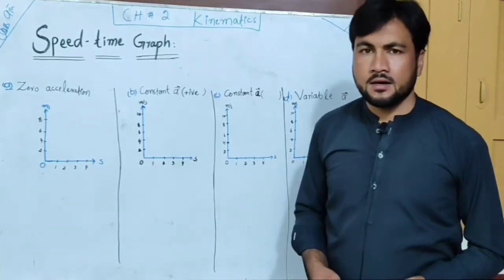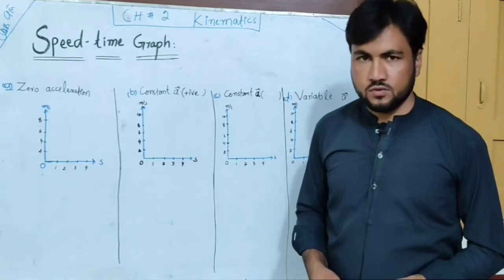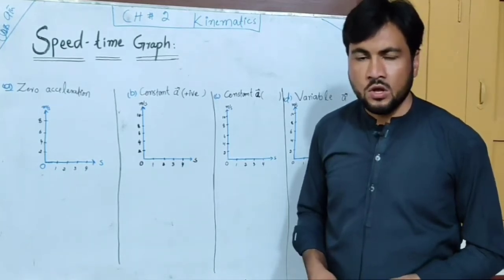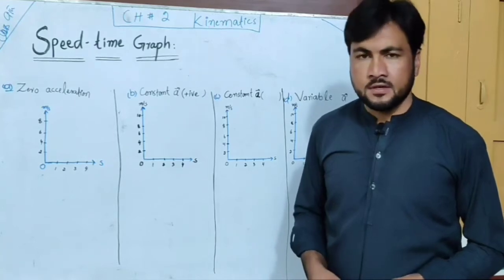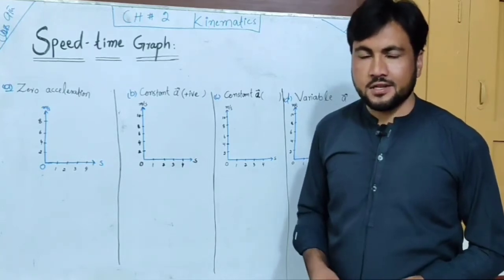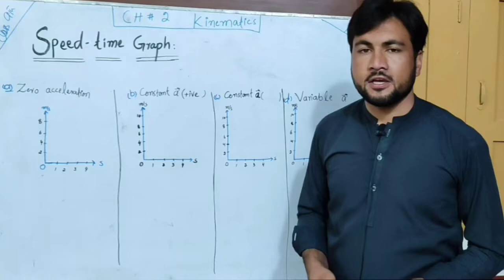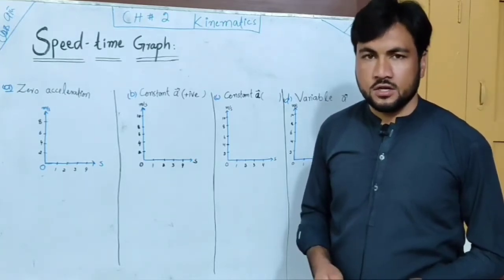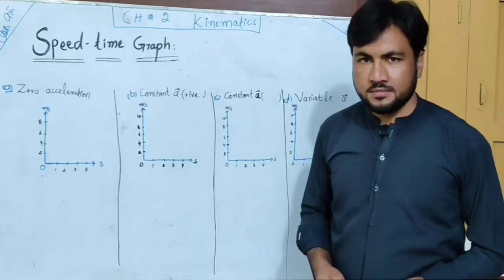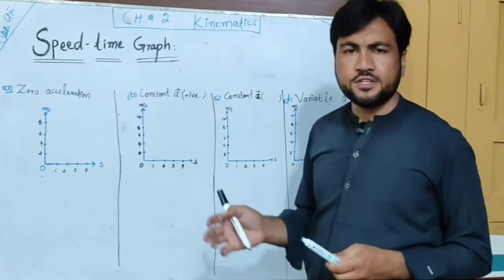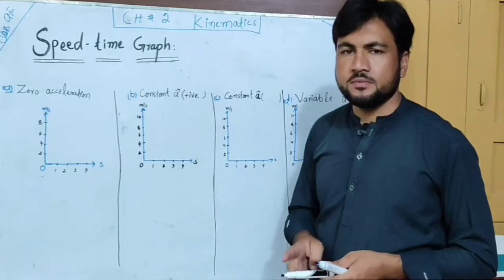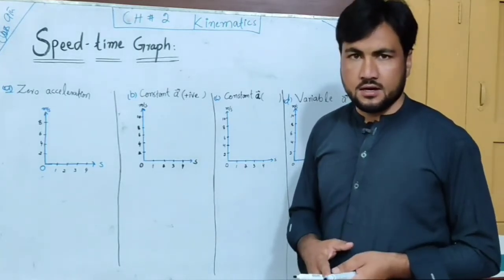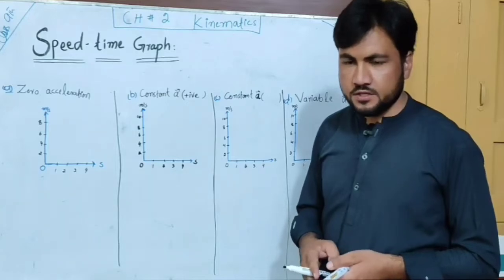Speed-Time Graph is a graphical analysis of the motion. The acceleration and different types are discussed with the help of graphs. The graphs represent acceleration over time. Speed-Time Graph is a graphical analysis of speed over time.